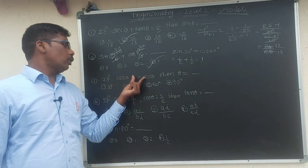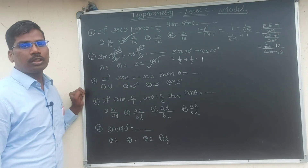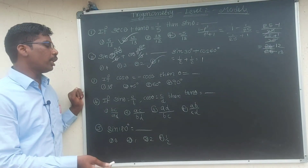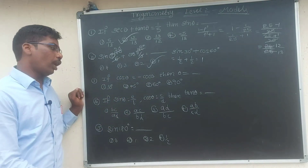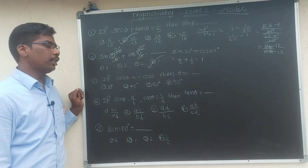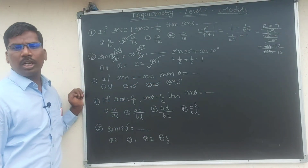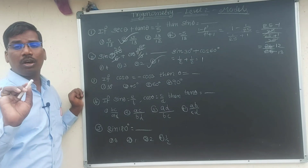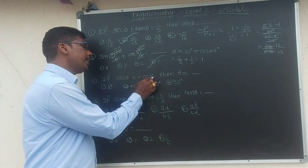If cos θ equals minus cos θ, then θ equals how much? If we try θ = 90 degrees: cos 90 is 0, and minus 0 is also 0. Since 0 is neither positive nor negative, 0 equals 0. That's why the answer is 90 degrees.